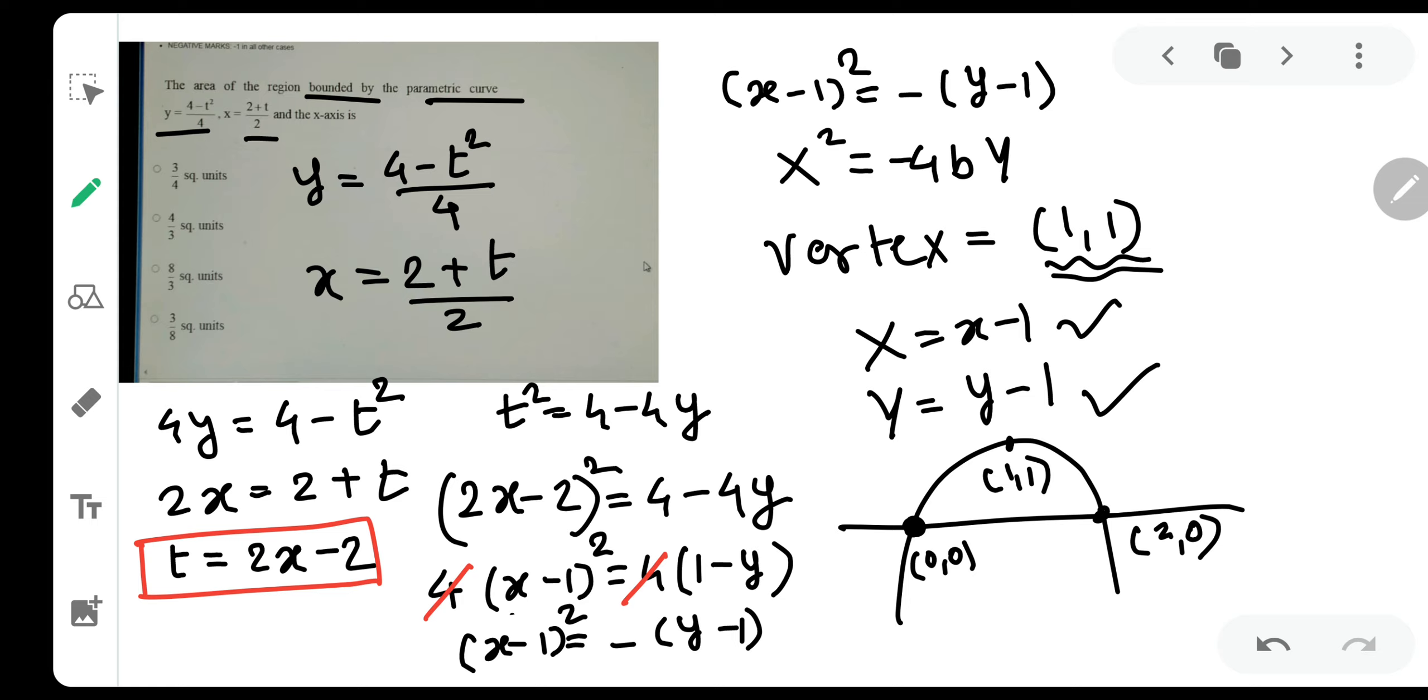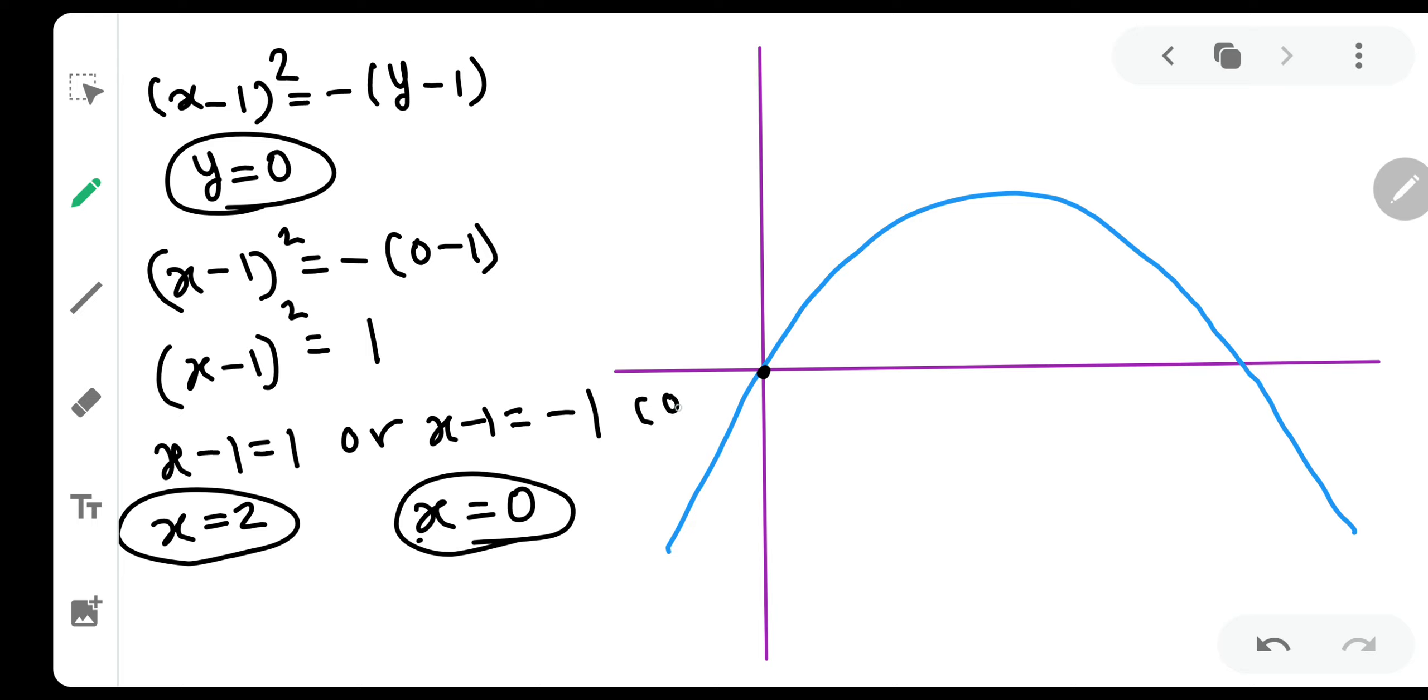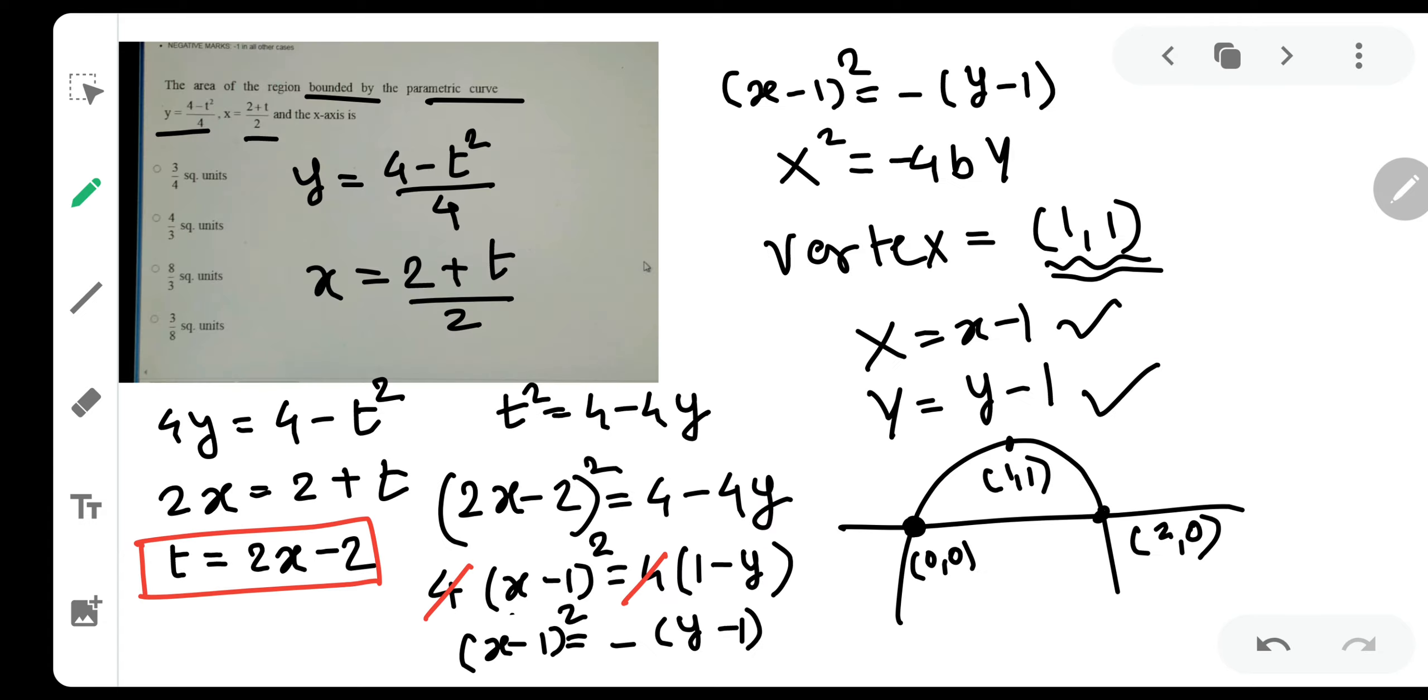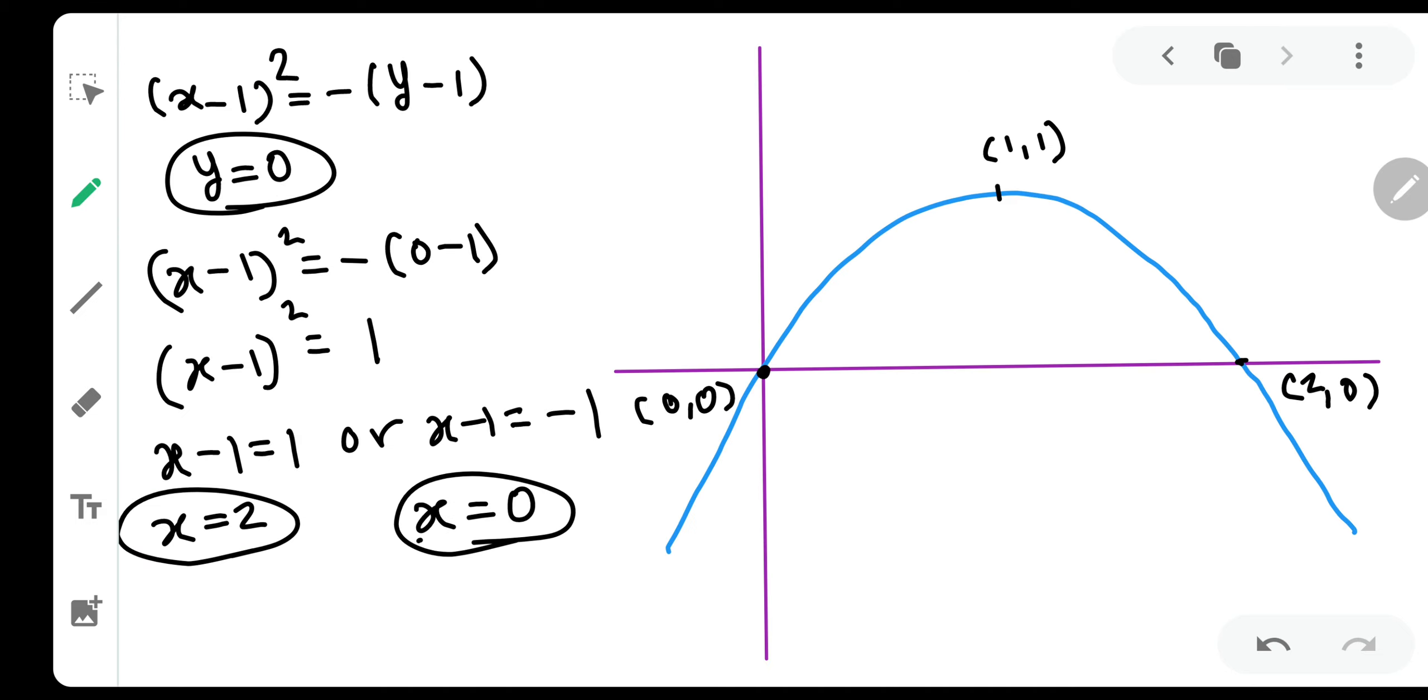So 0 comma 0 right. And this is 1 comma 1 though it is not of any use over here. And this is 2 comma 0. Now they have asked us the area bounded by the curve and x axis. This is our blue area right. Blue curve and the area bounded by x means blue curve and parallel line. As you can see this particular area is what we need. So very simple this area is falling on x axis.